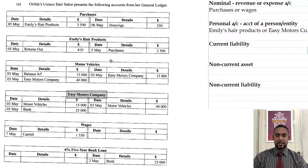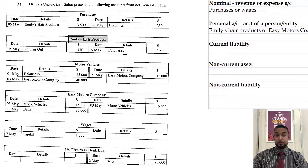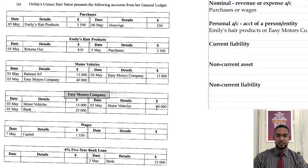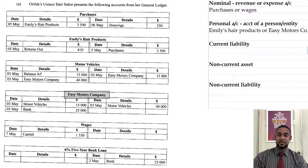Next, we have a current liability. Emily's hair products — we are purchasing hair products from that person on credit, and I'm seeing it's 3,500 with returns out of 410, so we still owe Emily some money. Easy Motors — it's looking like we have $40,000 on this side and $40,000 on that side, so that account is in balance. So I wouldn't count that as a current liability, at least as it currently stands at the end of the period.